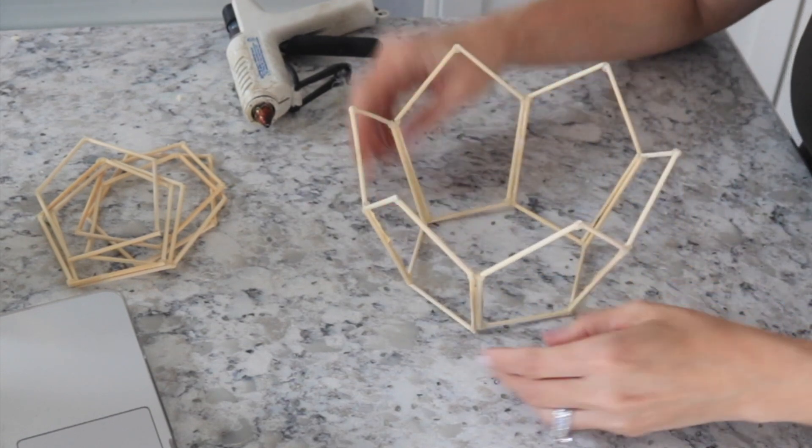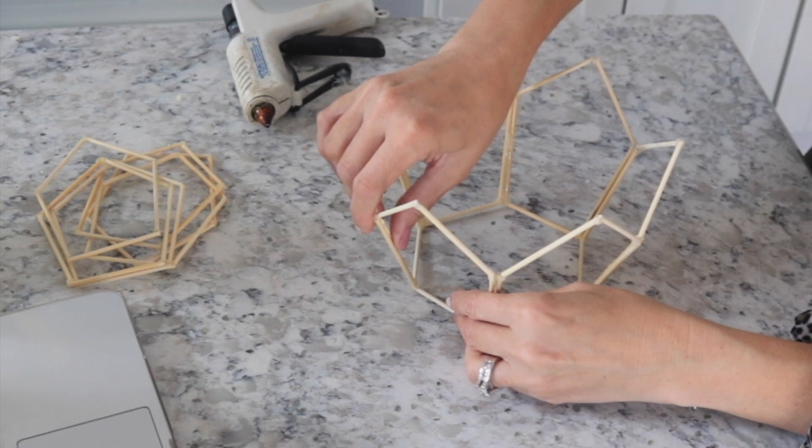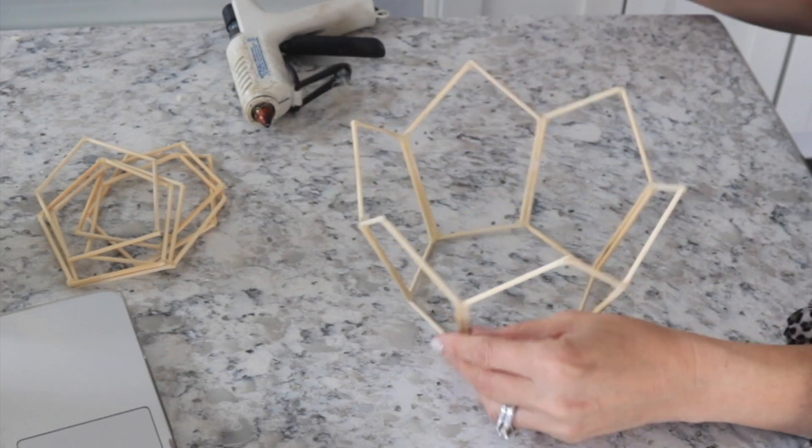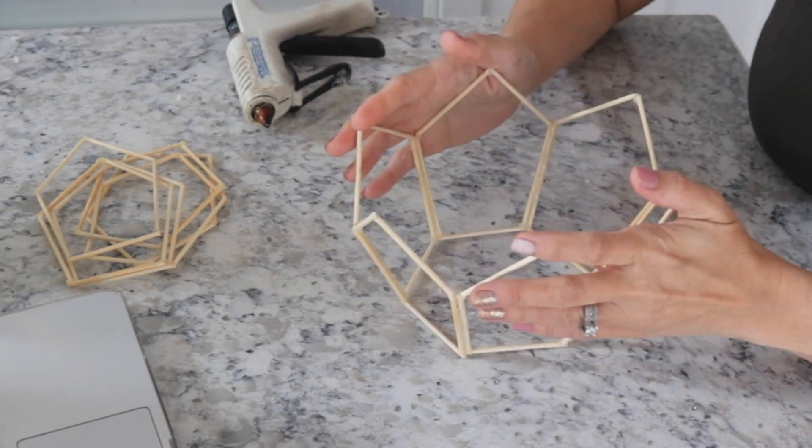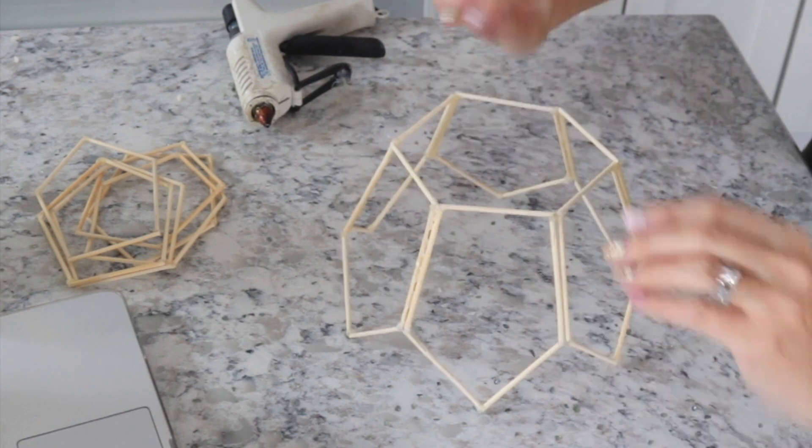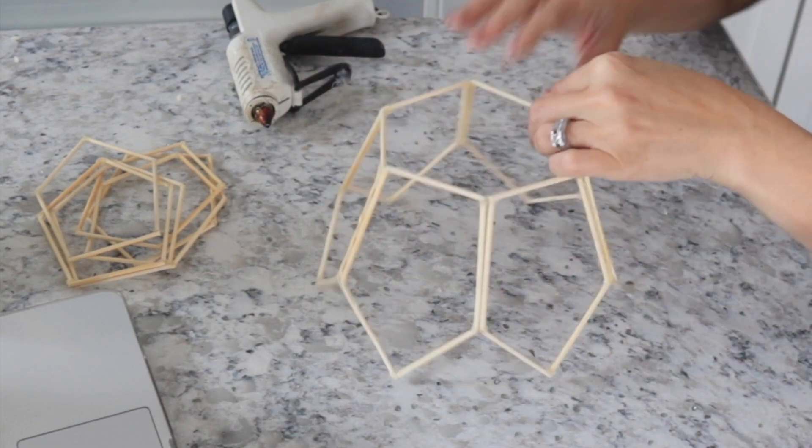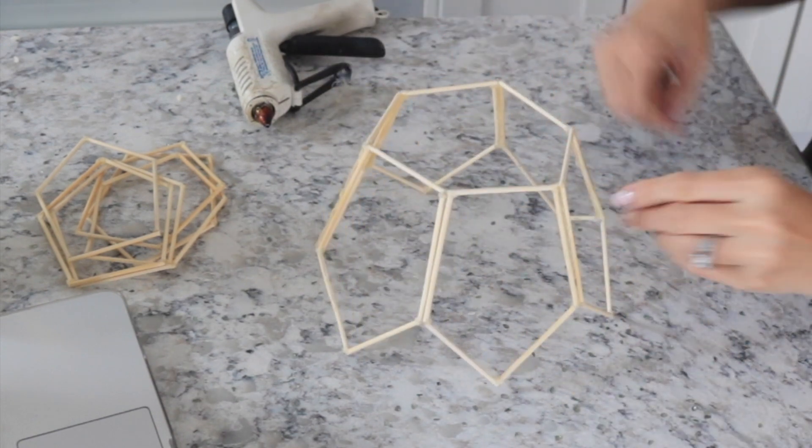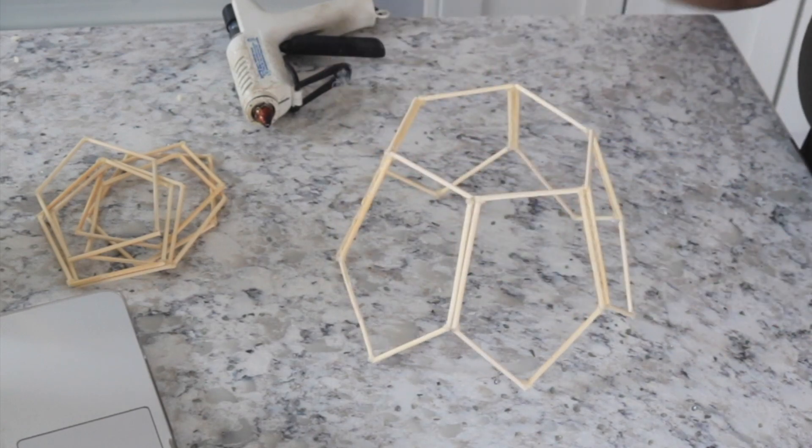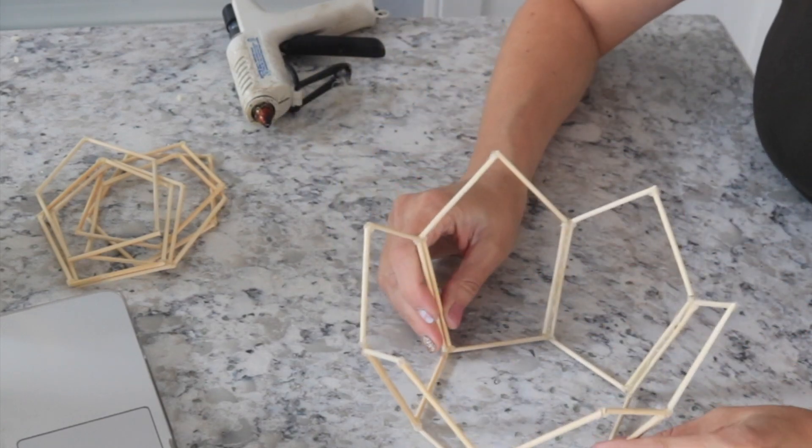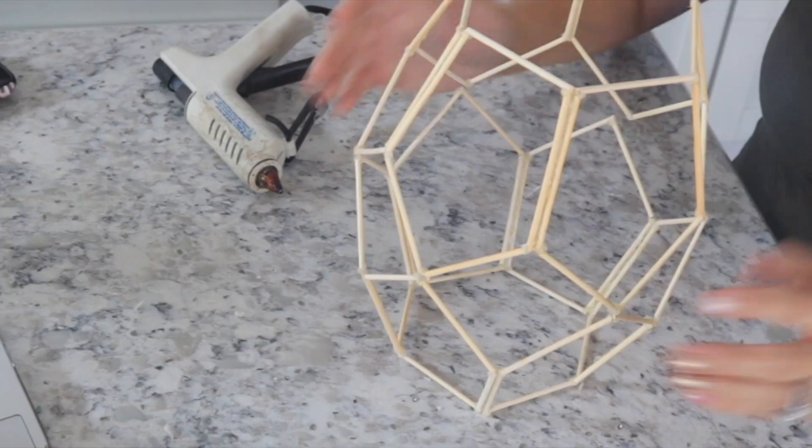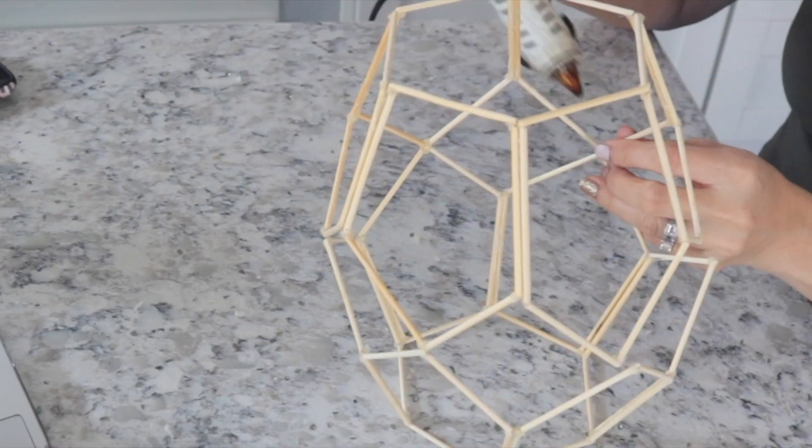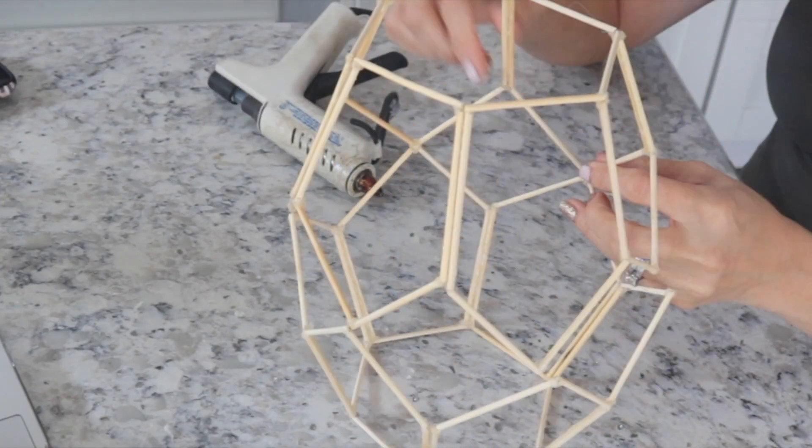Now you might have to bend it a little bit because these should all be equal sides. I believe this is a hexagon shape there at the top. So you kind of want it to all be even and symmetrical. It's a little crooked because it's not perfect, but for the most part it's pretty symmetrical. Now like I said, you're going to do that with the other part and now we're going to stack them on top of each other and glue them together.